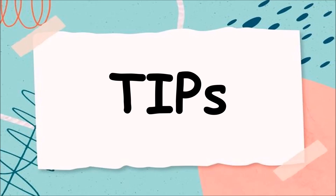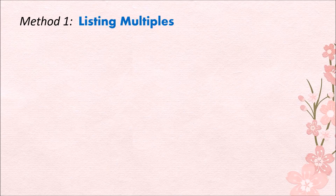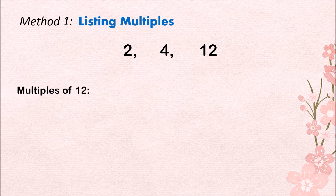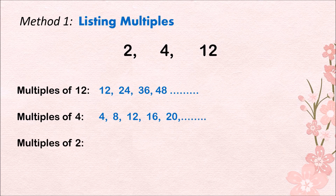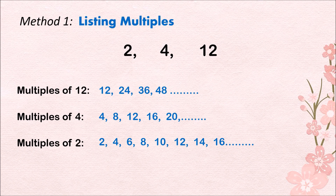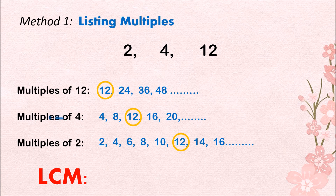Here's a tip to easily spot the LCM using this method. First, start listing the multiples of the biggest number. Among 2, 4, and 12, the biggest is 12. The multiples of 12 are: 12, 24, 36, 48, and so on. Then for 4: 4, 8, 12, 16, 20, and more. Next, the multiples of 2: 2, 4, 6, 8, 10, 12, 14, 16, and so on. The first common multiple you see on the list will be your LCM. Here it is 12, so the LCM of 2, 4, and 12 is 12.